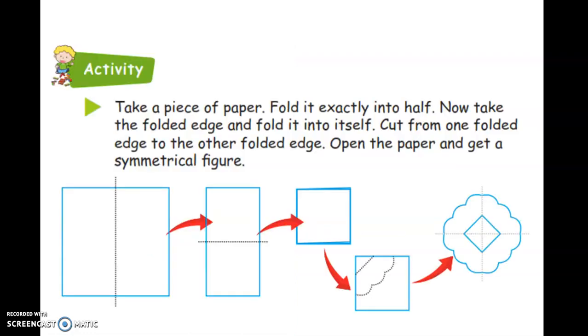Friends, you can do this activity at your home. Take a piece of paper, fold it exactly into half. Now take the folded edge and fold it into itself. Cut from one folded edge to the other folded edge. Open the paper and get a symmetrical figure.